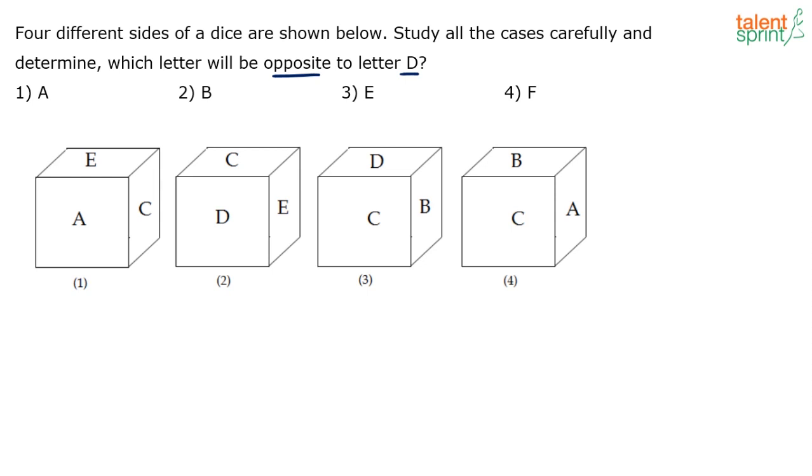I think within no time you should be able to say that A is going to come opposite to D. A and D will be opposite each other. Option one is the answer.